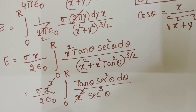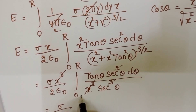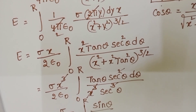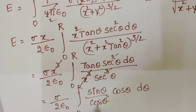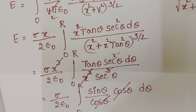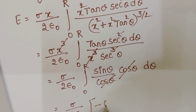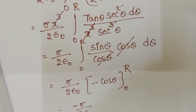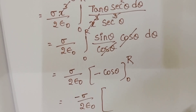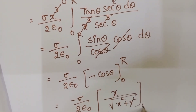After x³ cancels and sec²θ also cancels, we get (sigma / 2ε₀) integral of sin θ dθ. The integral of sin θ is −cos θ. So E = (sigma / 2ε₀) [−cos θ] from 0 to r. Substituting back cos θ = x / √(x² + y²).